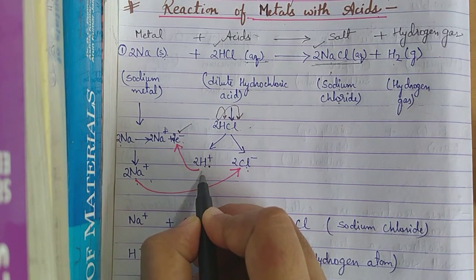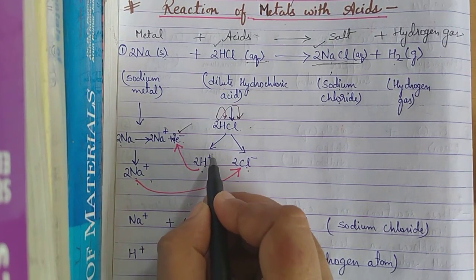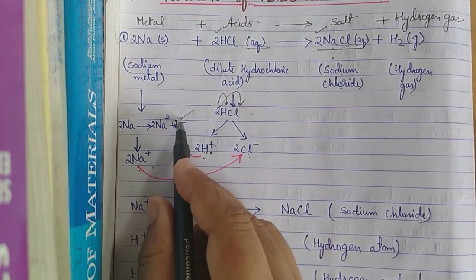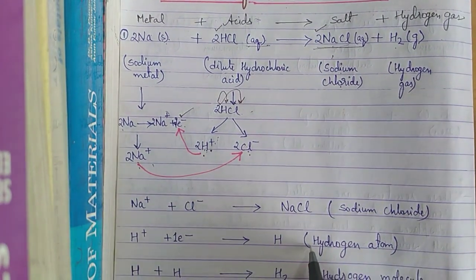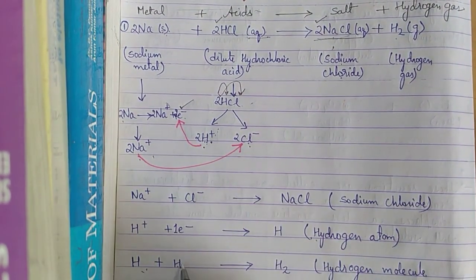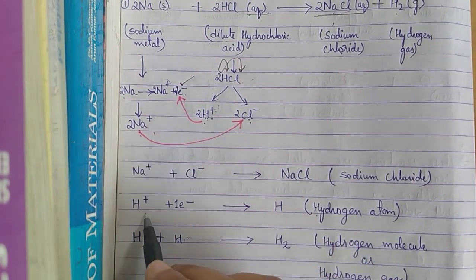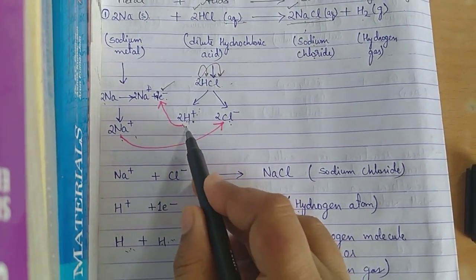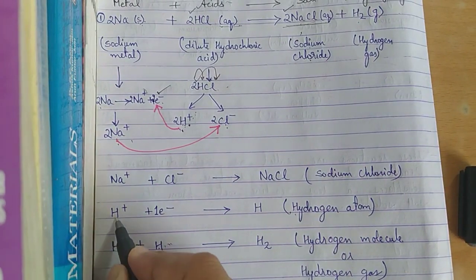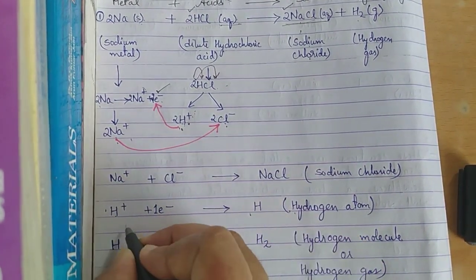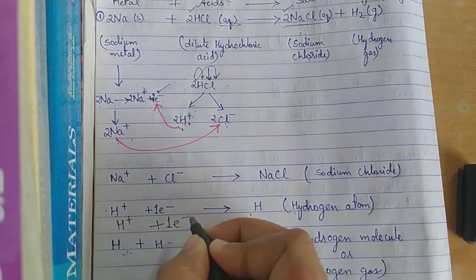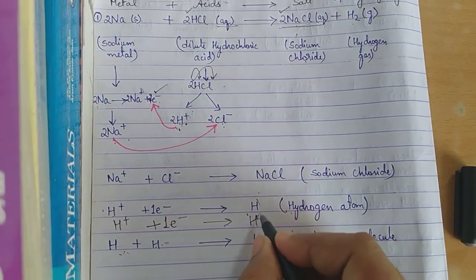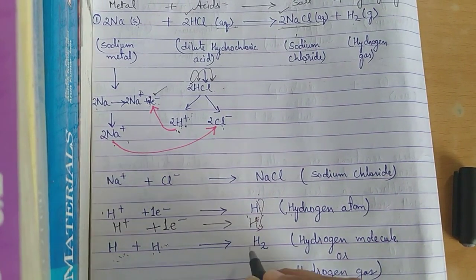What about the H⁺ ions? Hydrogen has one electron, and if that is removed, hydrogen has no electrons. So H⁺ accepts the released electrons — forming hydrogen atoms. Since there are two H⁺ ions and two electrons, each H⁺ accepts one electron to form a hydrogen atom.